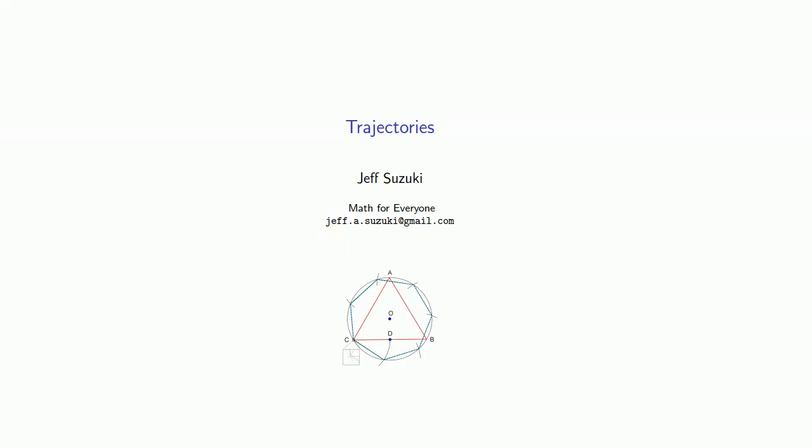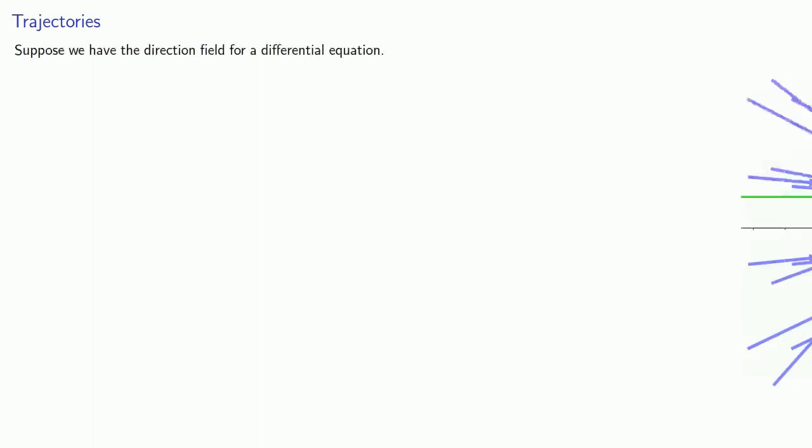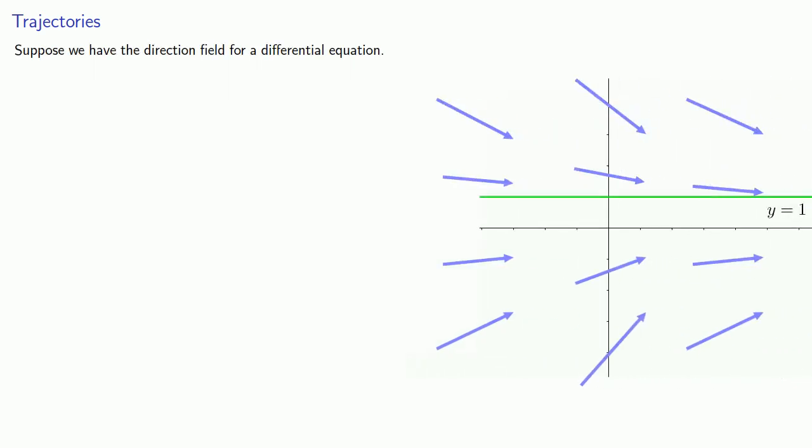Once we have a direction field, we can start to draw some trajectories. What's a trajectory, you ask? Suppose we have the direction field for a differential equation. An initial value corresponds to a value of y, and that in turn corresponds to a point in the ty-plane.